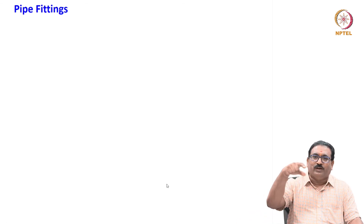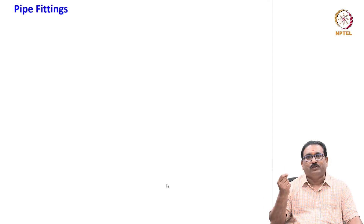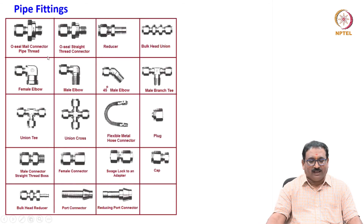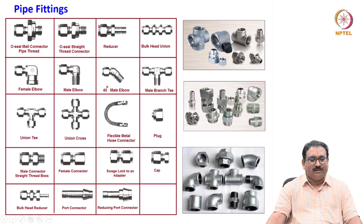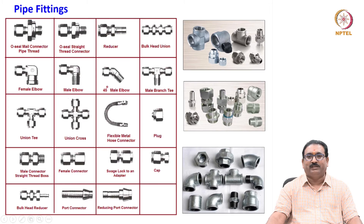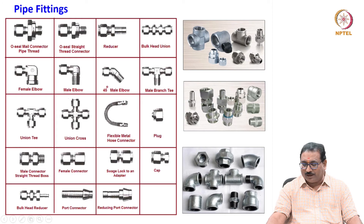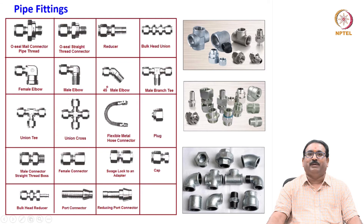Regarding pipe fittings used in the air distribution system: various connectors are used, including the O-seal male connector for pipe thread, O-seal straight thread connector, reducers, bulkhead union, female elbows, male elbows, 45-degree male elbow, male branch tees, and various other types of pipe fittings used in piping layouts.